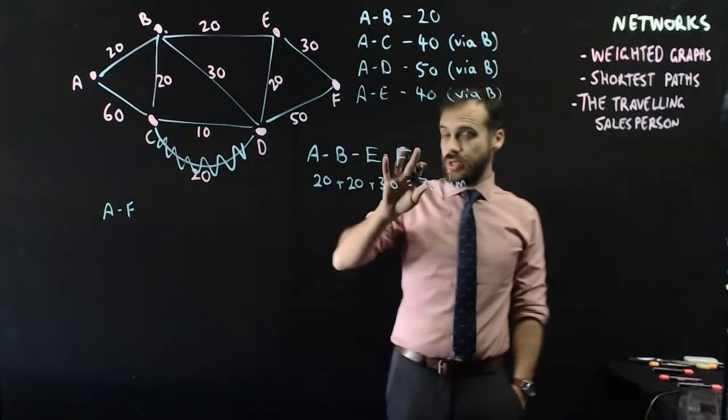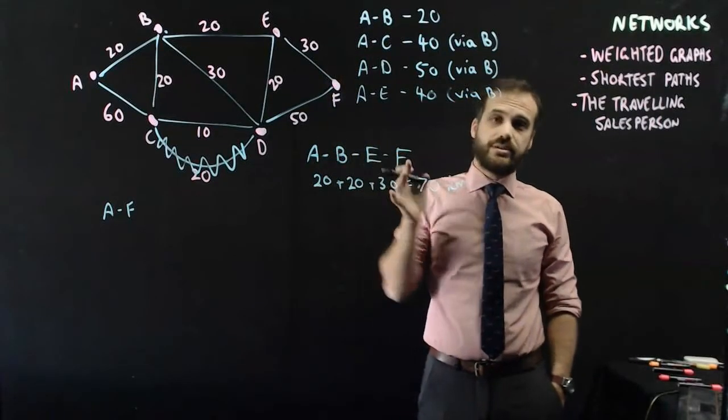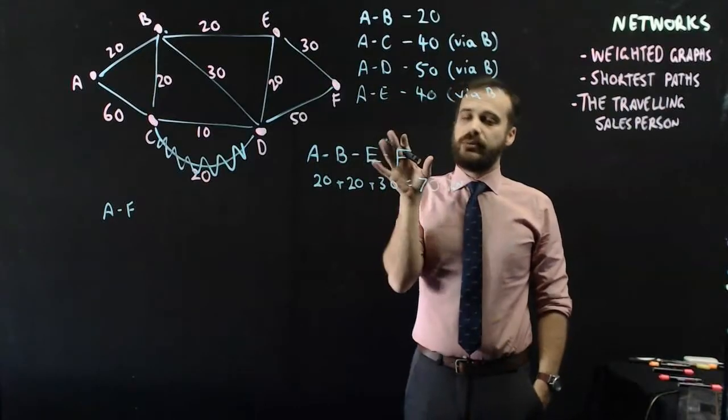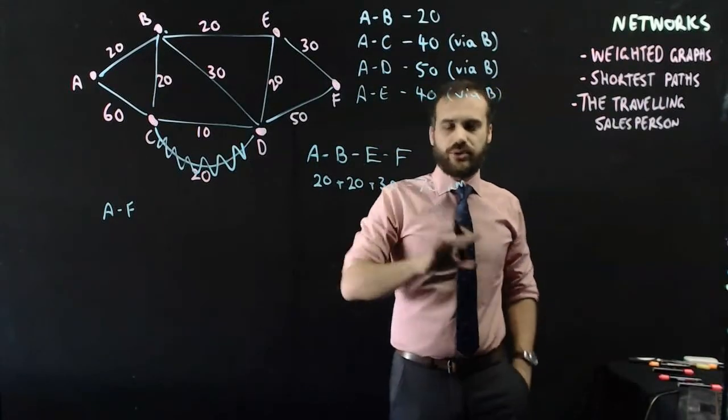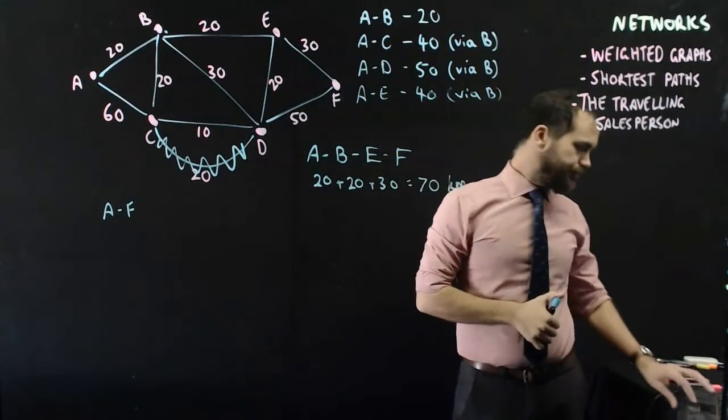The shortest path from A to F is 70 kilometres. Now, you really want to work through it pretty systematically, because if you don't, you might miss a trick, and you might go longer than you really had to.